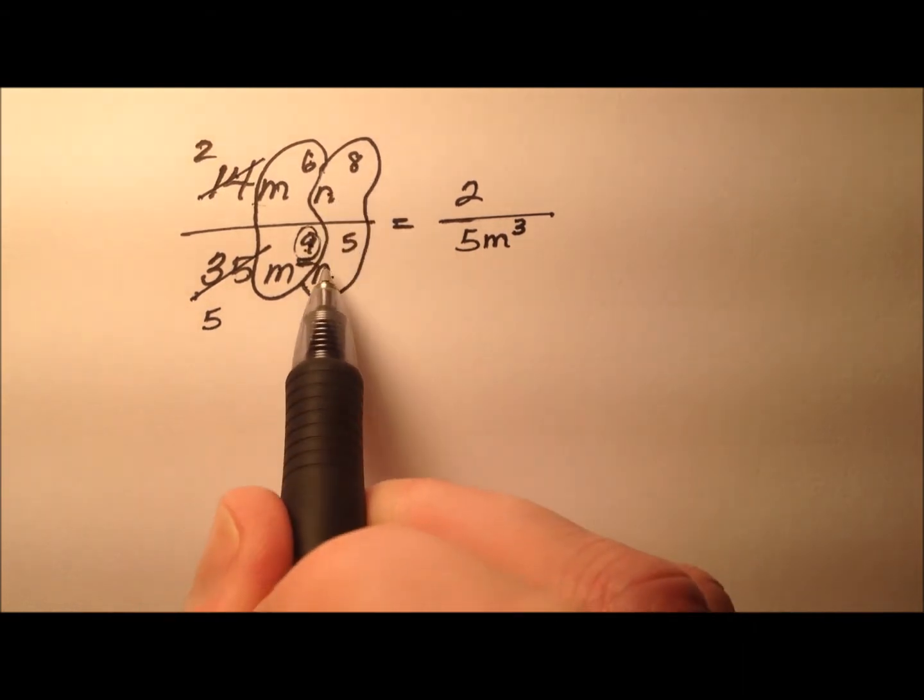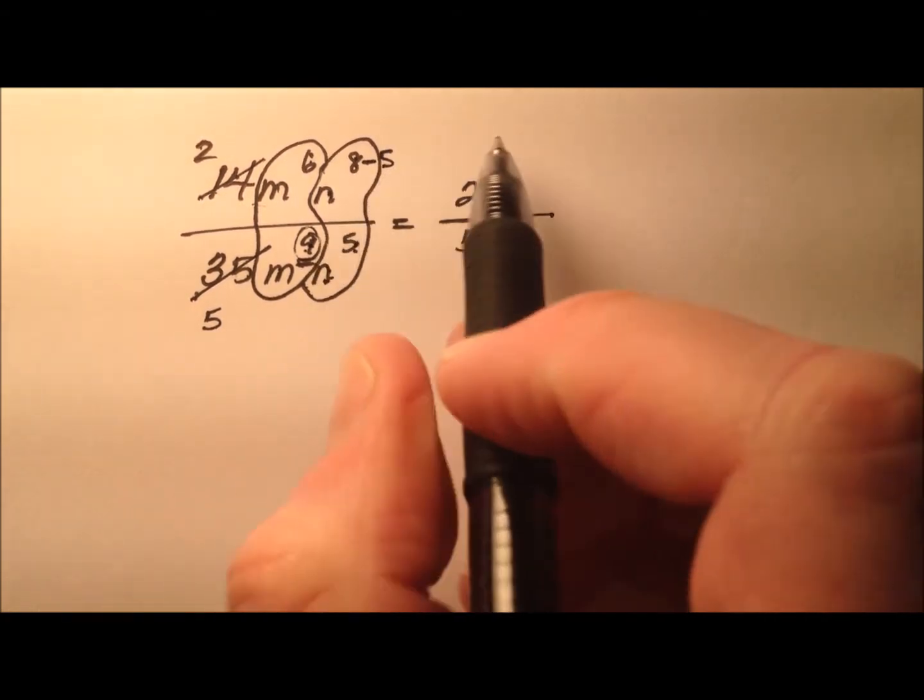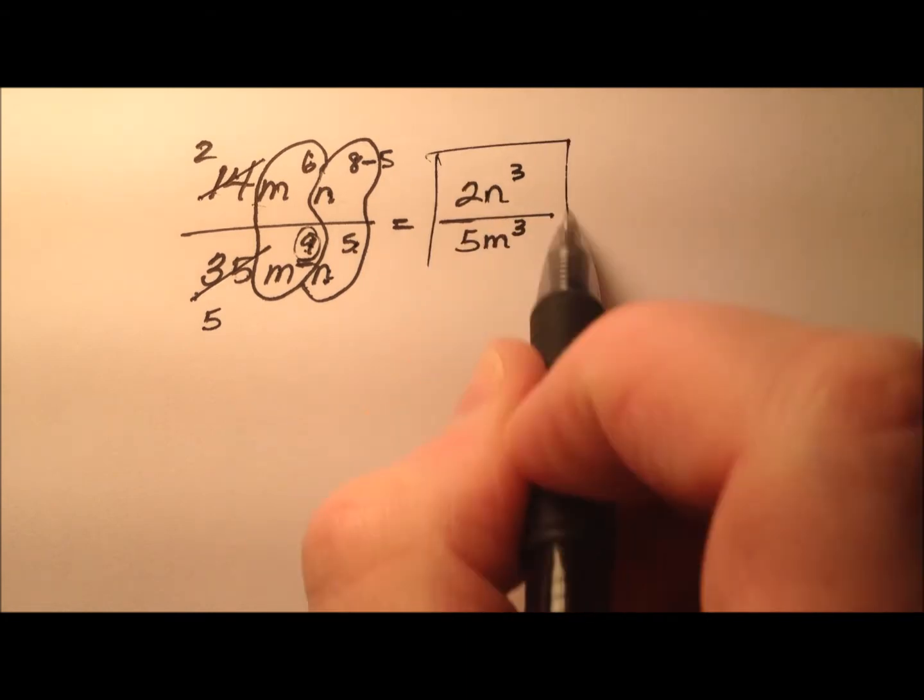Finally, n to the 8th and n to the 5th, when we're dividing like bases we subtract. So 8 is bigger, 8 minus 5, and that'll be n cubed.